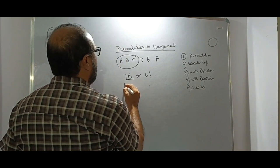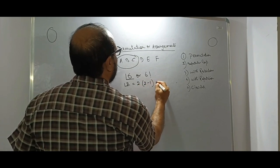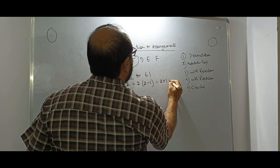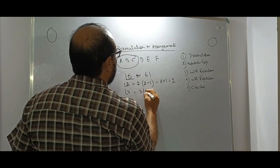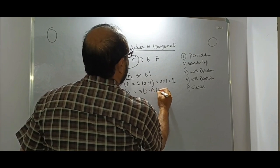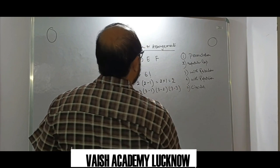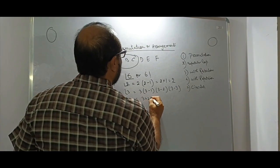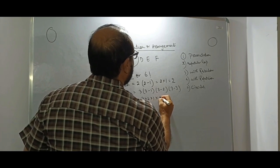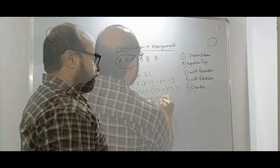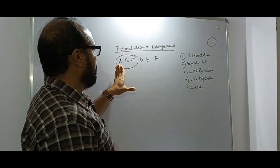For example, factorial 2 = 2 × (2−1) = 2 × 1 = 2. Factorial 3 = 3 × (3−1) × (3−2) × (3−3) = 3 × 2 × 1. And factorial zero is also defined this way.